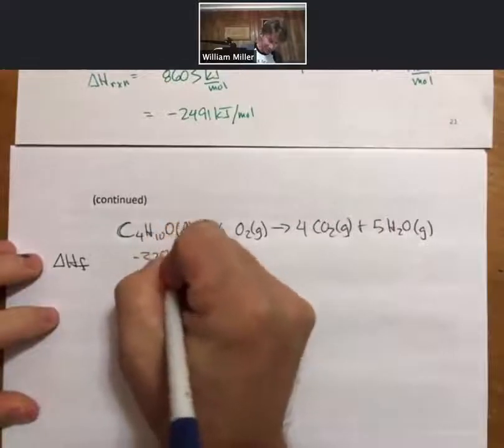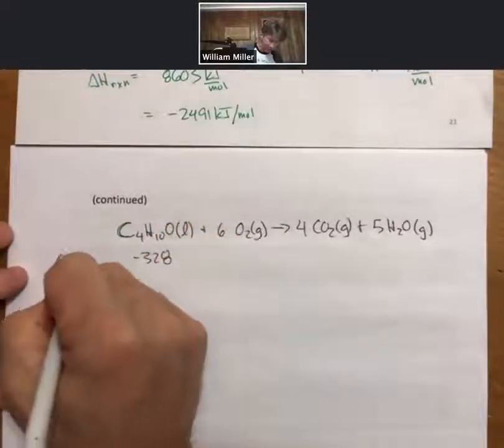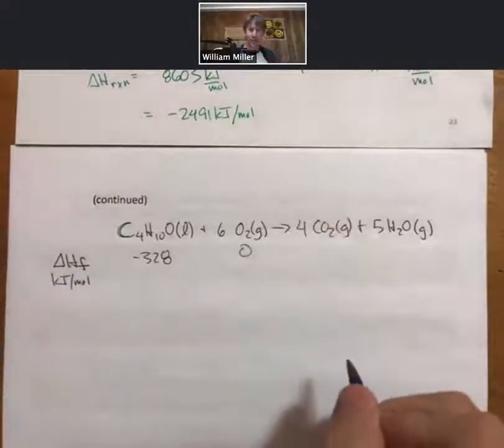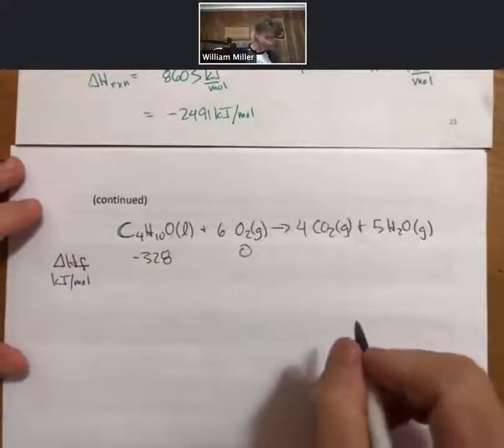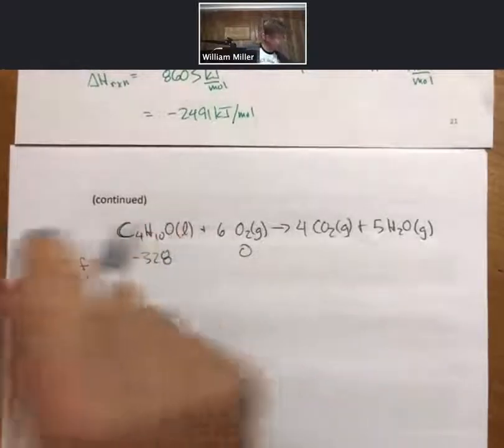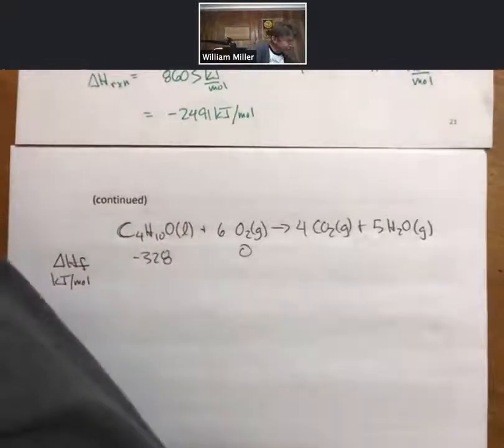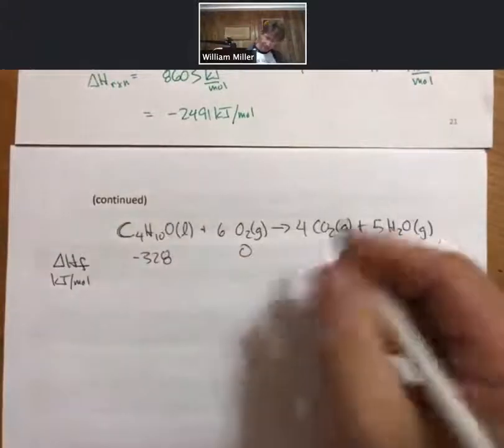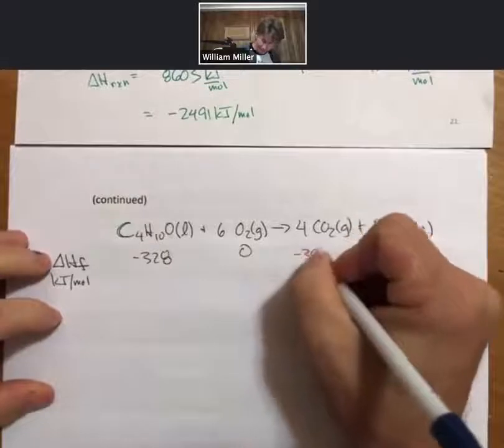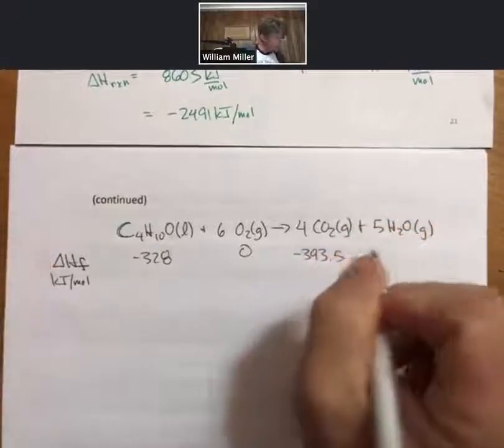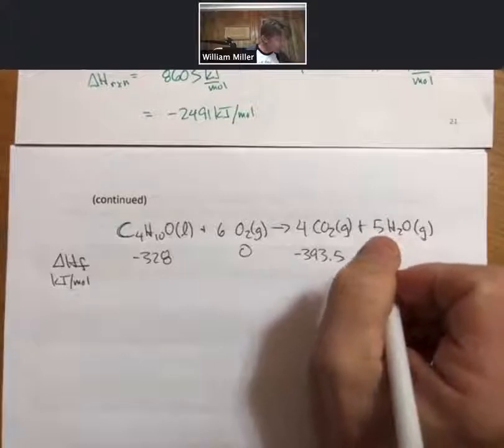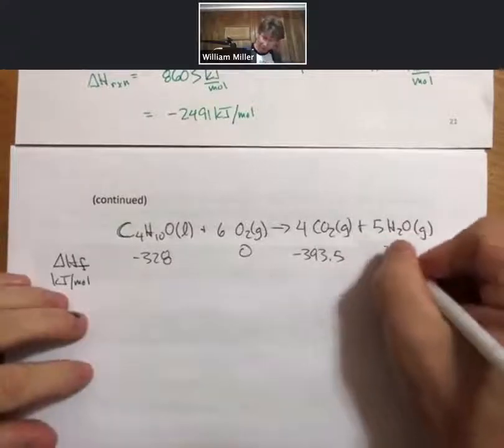And it is minus 328—I must have googled it. These are kilojoules per mole. Oxygen is 0, carbon dioxide is minus 393.5. Let me double check that on my list. Yep. H2O gas, minus 241.8.